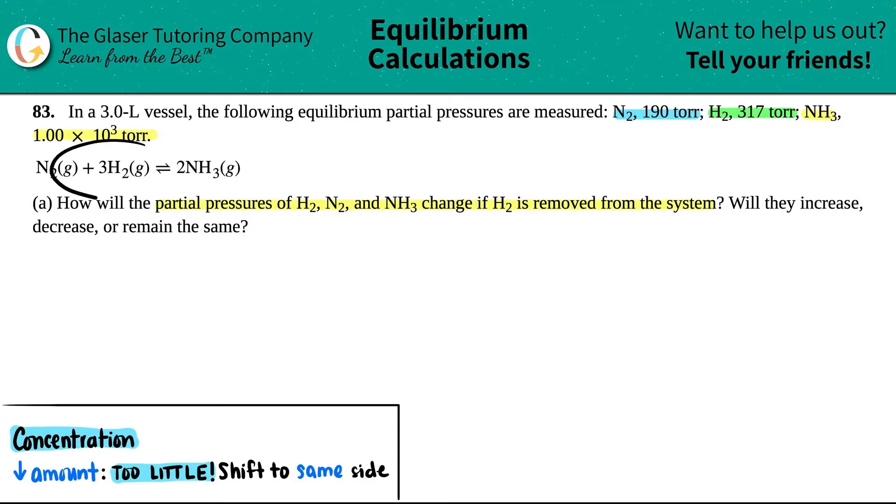Okay, so first thing is, I'm just going to write this out a little bit bigger just so that we can work with it. So I have N2 gas plus 3H2 gas, and this comes to equilibrium. What happened to that extra parenthesis there? 2NH3 gas. Okay, and I just take note that these are all gases.